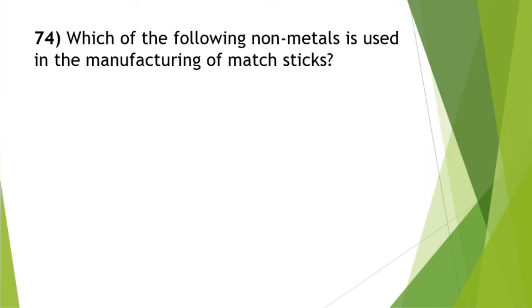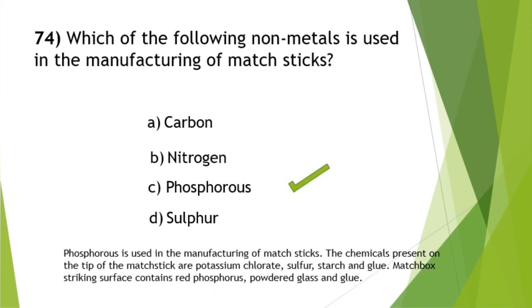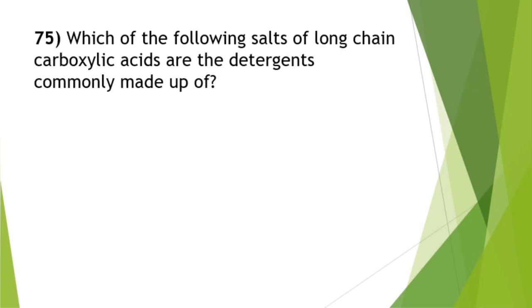Which non-metal is used in the manufacturing of matchsticks? The answer is option C — phosphorus. The chemicals present on the tip of matchsticks are potassium chloride, sulfur, starch, and glue. The matchbox striking surface contains red phosphorus, powdered glass, and glue. These are very important additional points — please write them in your notebook.